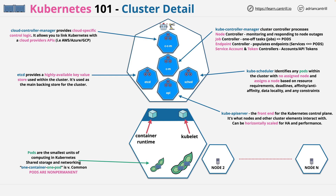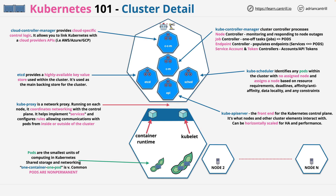I haven't spoken about services or endpoints yet — I will in a second. Lastly, on every node is KubeProxy. This runs on every node and coordinates networking with the cluster control plane. It helps implement services and configures rules, allowing communications with pods from inside or outside of the cluster. You might have a Kubernetes cluster, but you're going to want some level of communication with the outside world, and that's what KubeProxy provides.